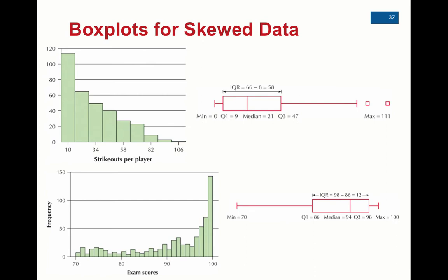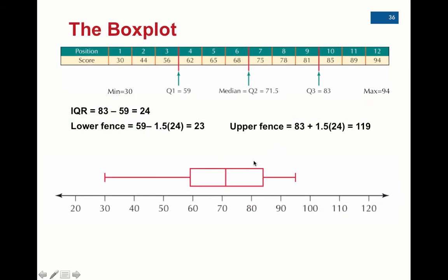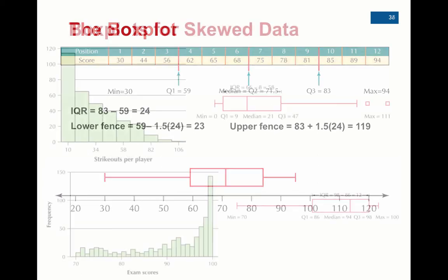However, we will have some data sets that are skewed and have outliers. So going back to this one real quick, this one is basically bell-shaped. The box is pretty symmetric. This whisker is a tad bit longer than this one, but not significant enough to say that there's a skewness in this data. We would generally call this boxplot bell-shaped.